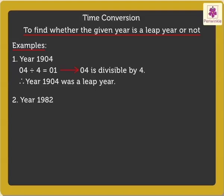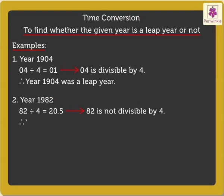Here, the number represented by the last two digits is 82, which is not divisible by 4. Thus, 1982 was not a leap year.